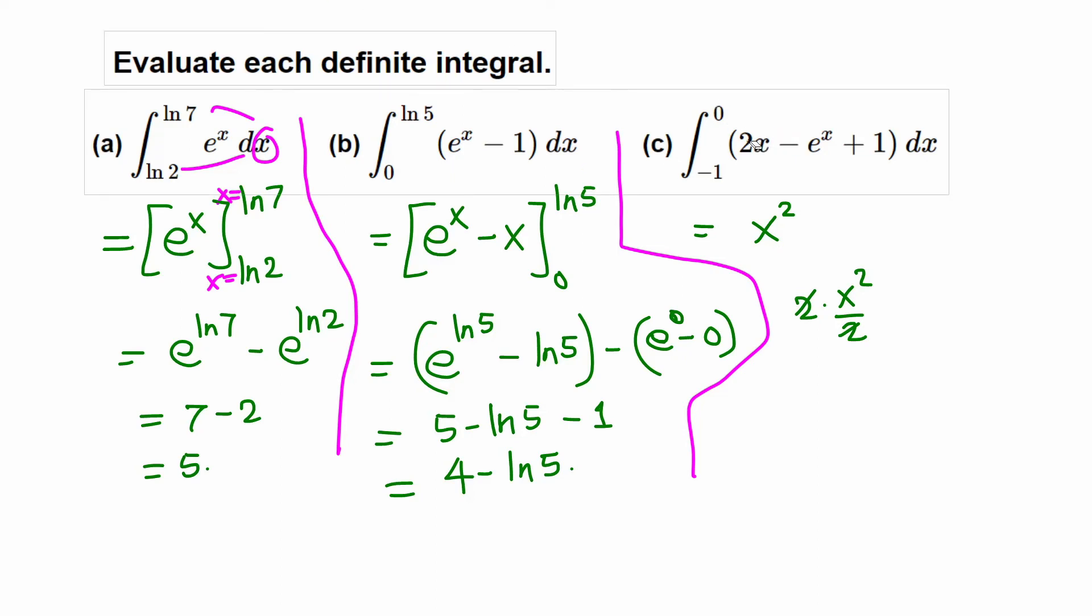Anti-derivative of 2x is x squared. Minus anti-derivative of e^x is just itself, plus anti-derivative of 1 is x. And we evaluate it from negative 1 to 0.